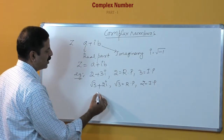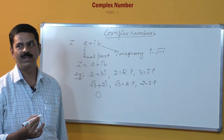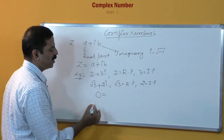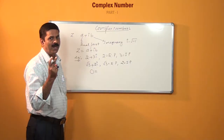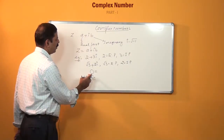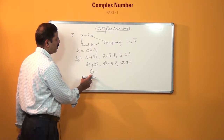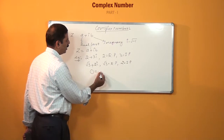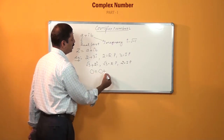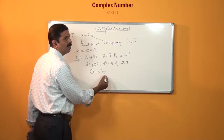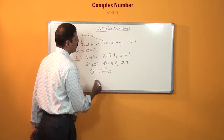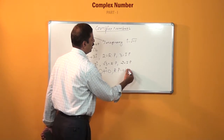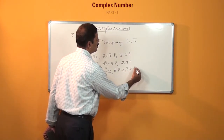Note that 0 is also a complex number. Though it may seem to contain only one part, we can represent it in complex form. 0 equals 0 plus i times 0, where the real part is 0 and the imaginary part is also 0.